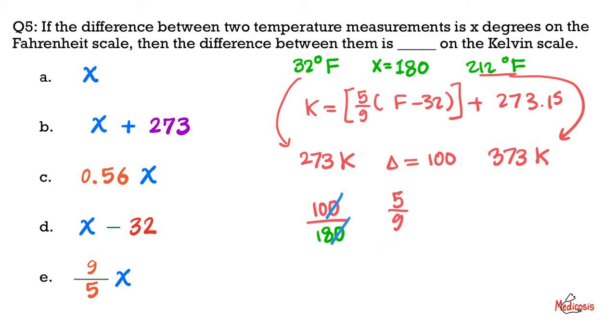This is close to half. It's not quite half, but it's close to half. It's about 0.56 of x, making choice C the correct answer, because the delta in Kelvin is about half of the delta in Fahrenheit.